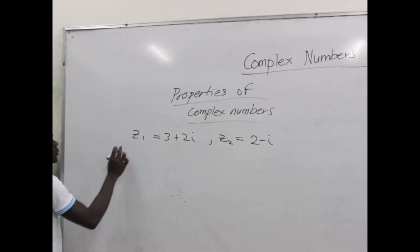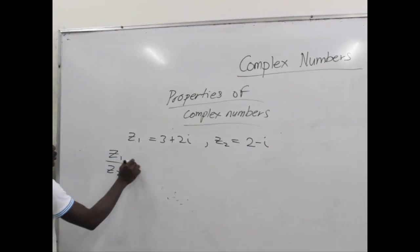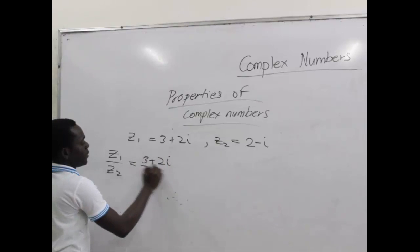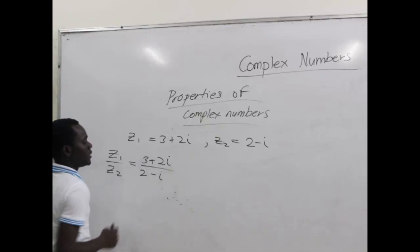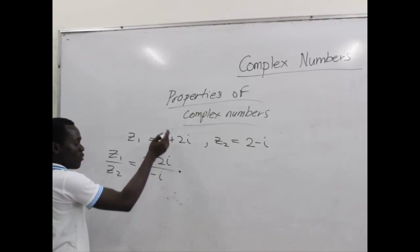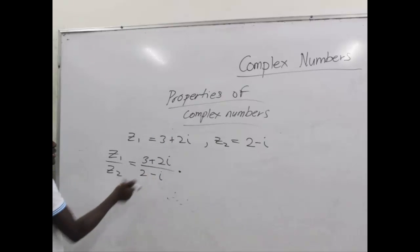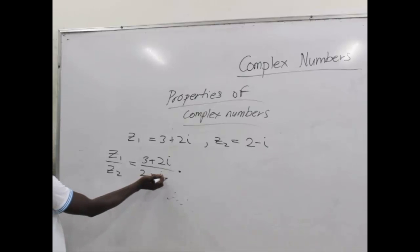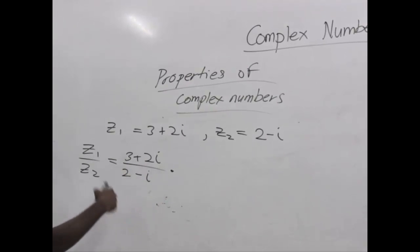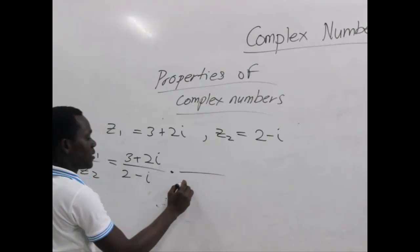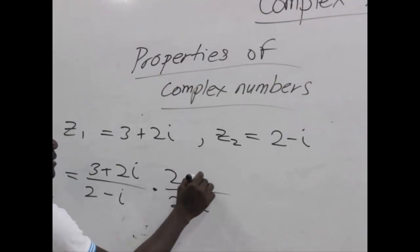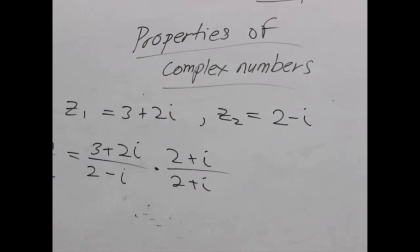We divide z1 by z2, which gives us the division of their components. We can do this if and only if we multiply both the numerator and the denominator by the conjugate of the denominator. Since the imaginary number here is negative, we change the sign to positive to get its conjugate: 2 plus i, so that we can cancel — we are just introducing 1.